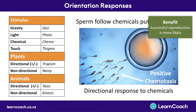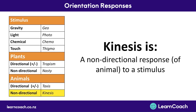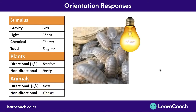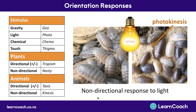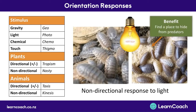Now let's look at kinesis — the non-directional response of an animal to some kind of stimulus. For example, if you turn on a light with slaters, they run around in no particular direction. This is a non-directional response to light, so we use 'photo' and 'kinesis' — photo kinesis. No positive or negative is needed because it's non-directional. The benefit is they just don't want to be seen, so they run in any direction to try and hide under something.